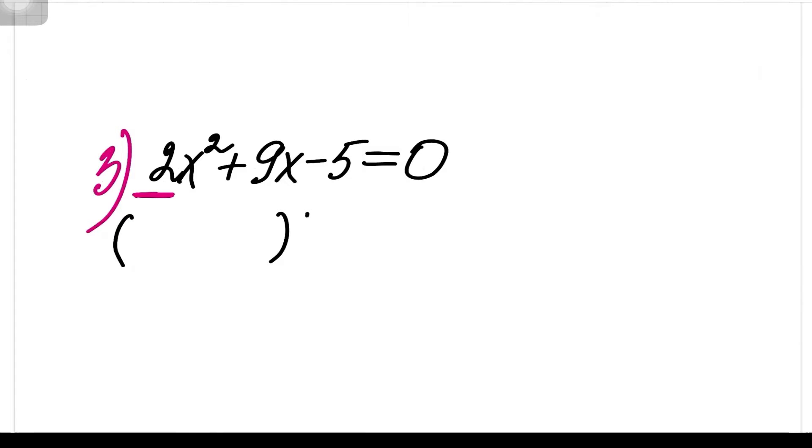First of all, right off the bat, you want to rewrite your quadratic as two sets of parentheses being multiplied together. Now, literally, you are going to draw a huge X off to the side.